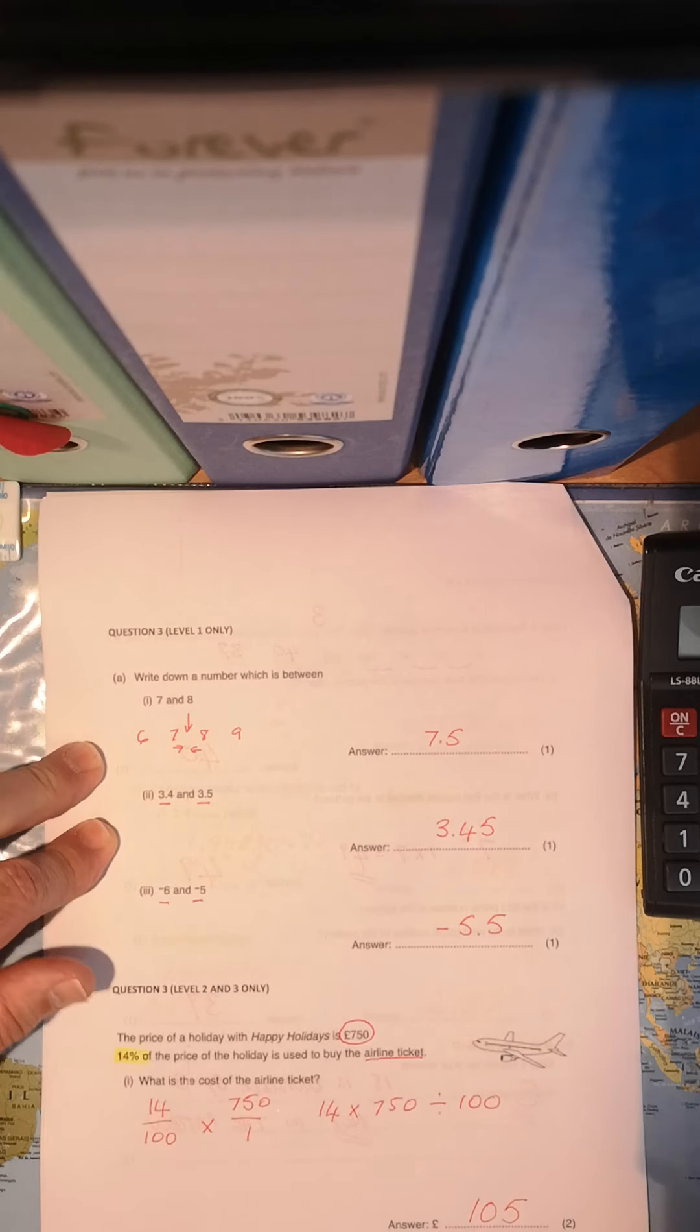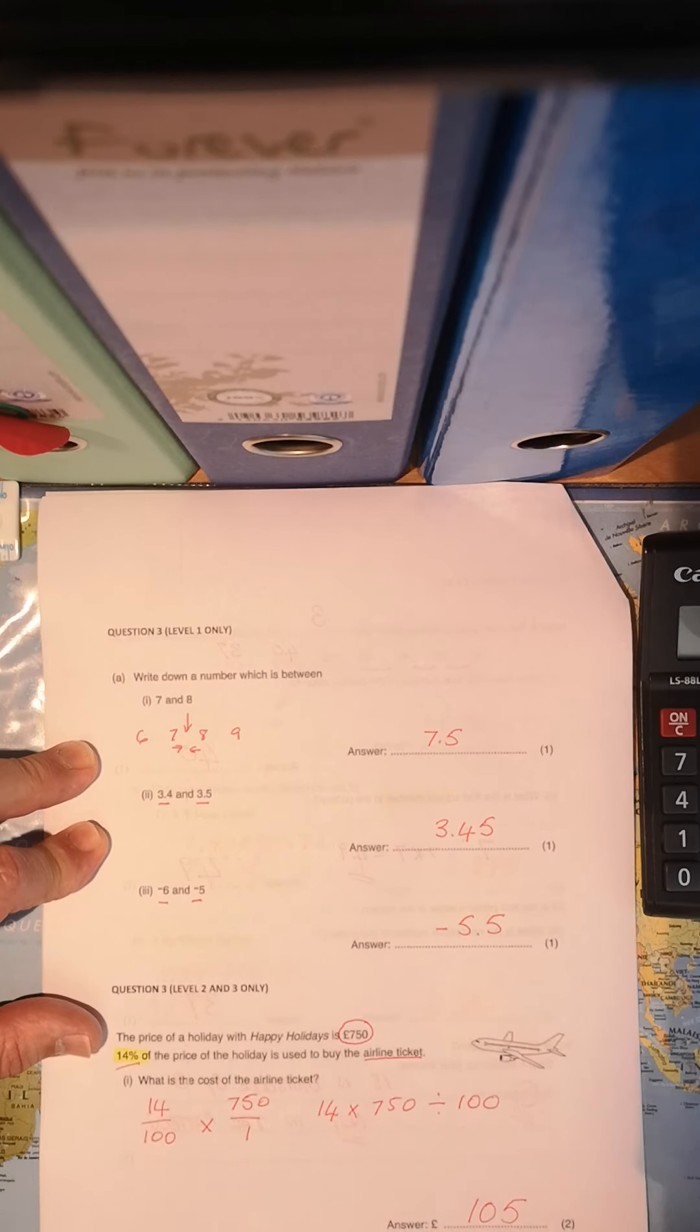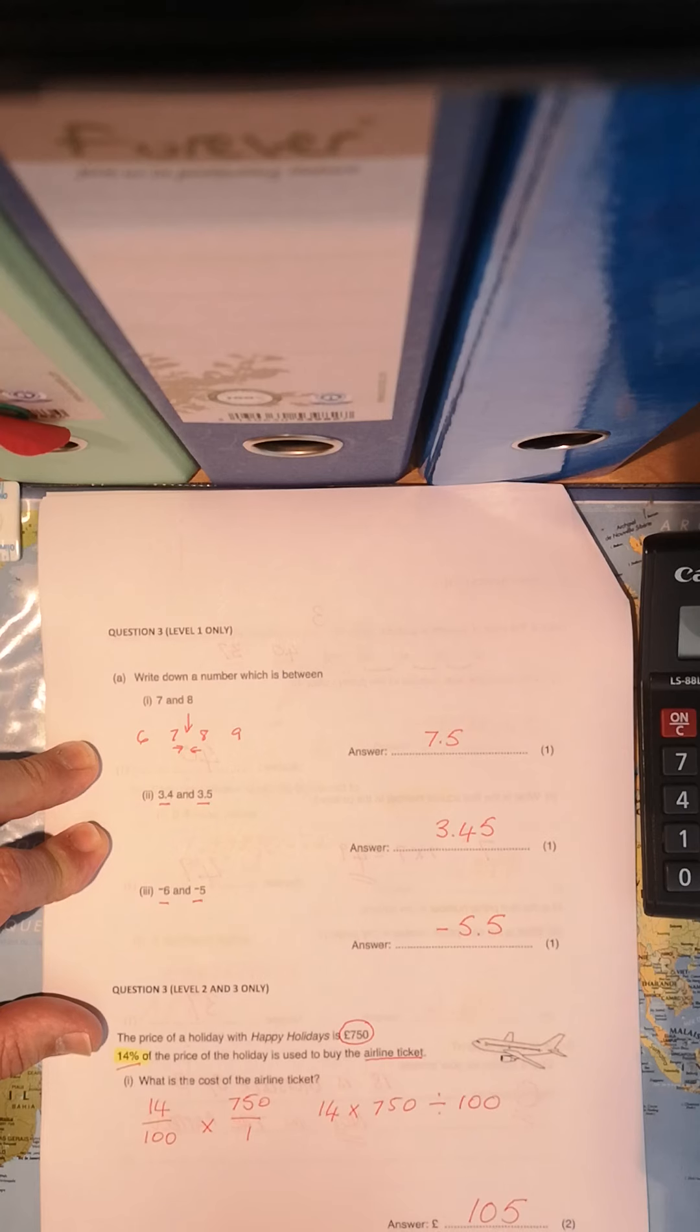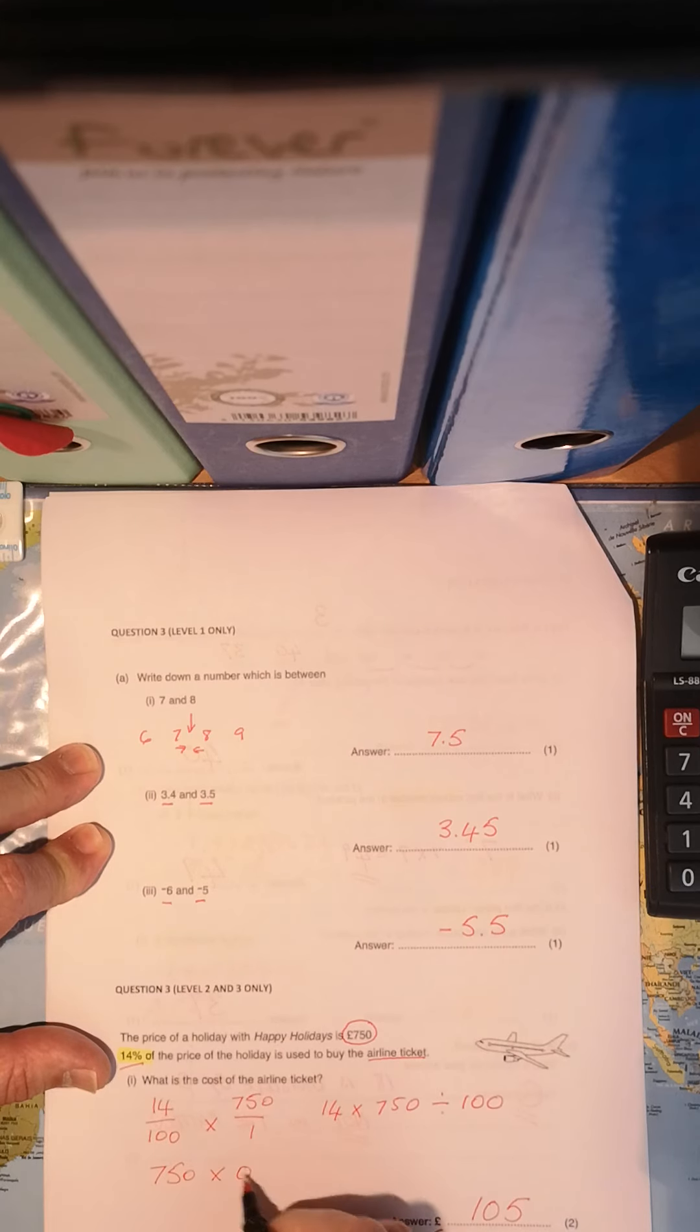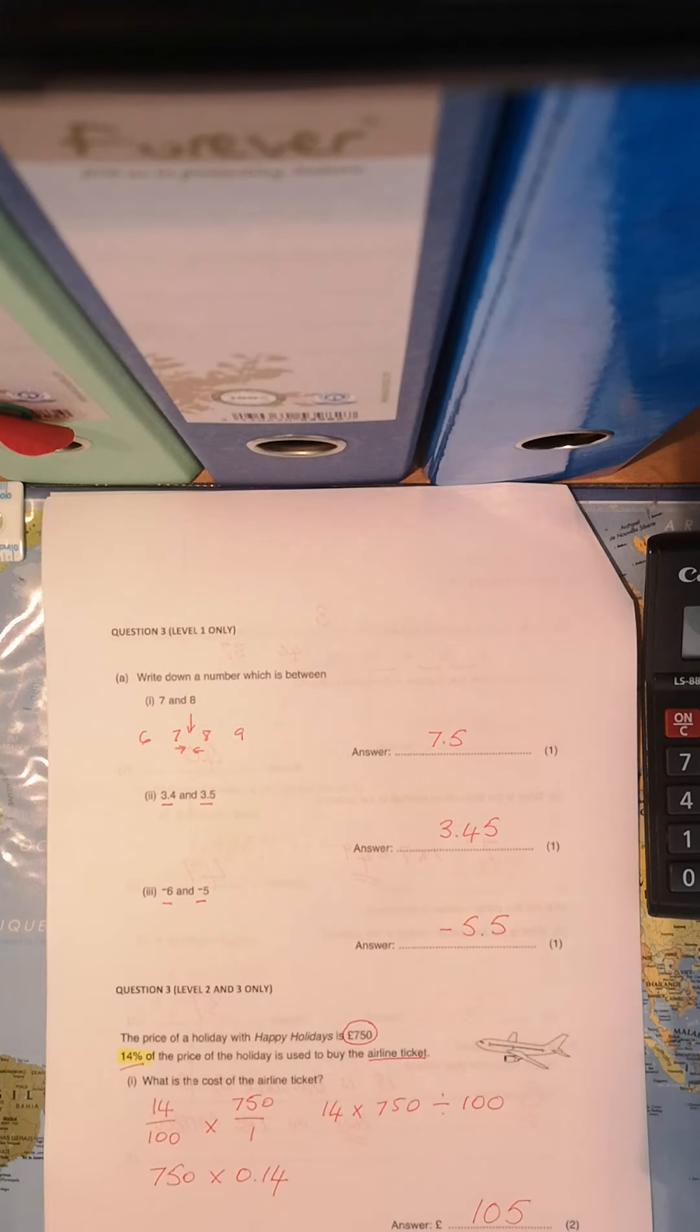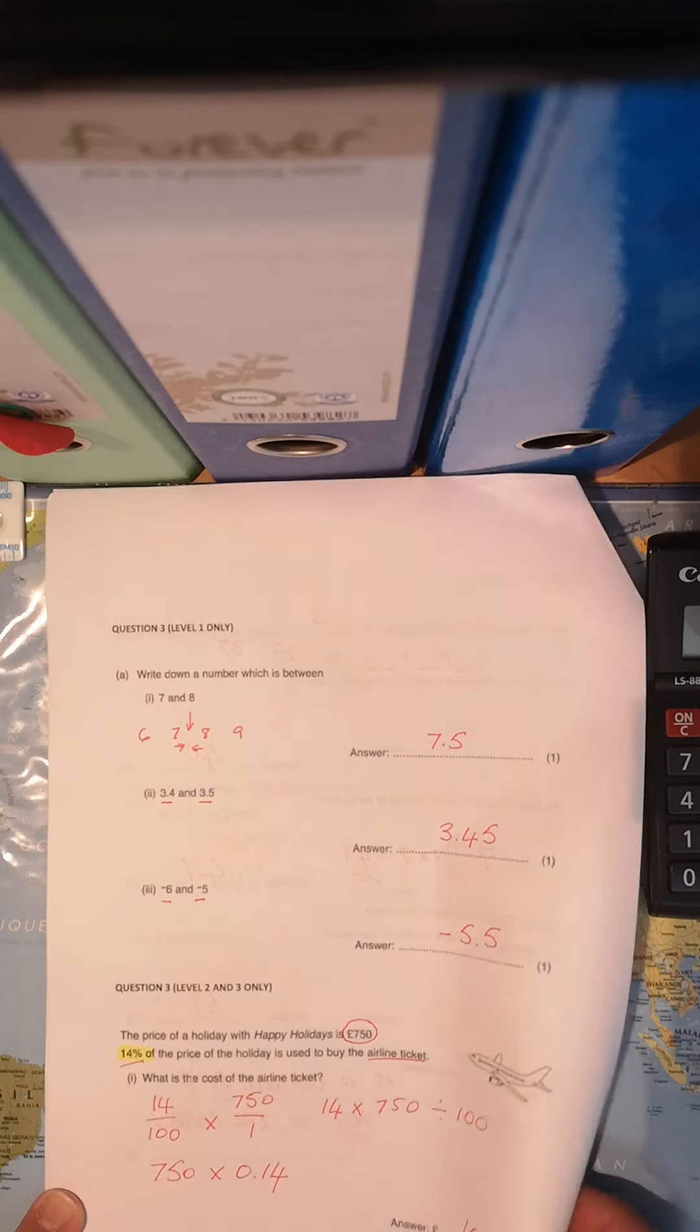But there's also another way of doing that. We could use a decimal. What is 14% as a decimal fraction? Yes, 0.14. So we could have said 750 pounds times 0.14. And that's how we arrived at the answer of 105 pounds.